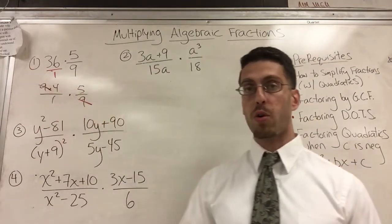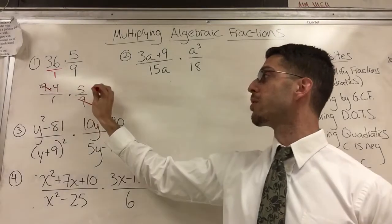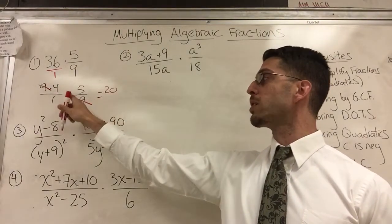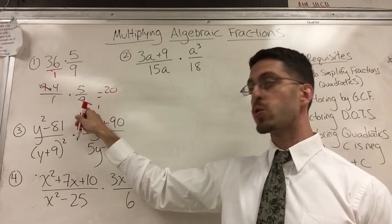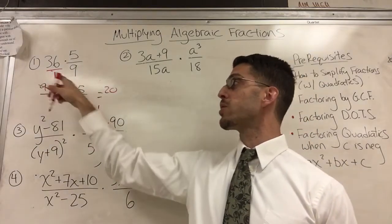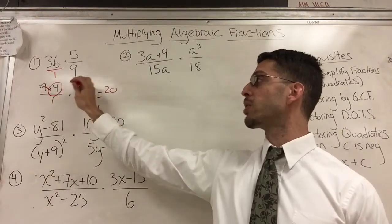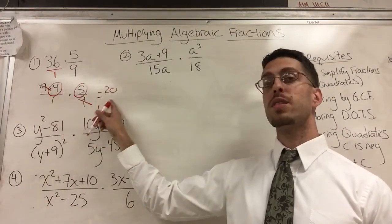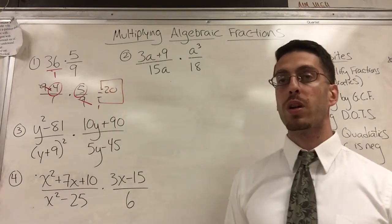9s cancel out. That's called cross-cancelling. And then I just multiply whatever's left. 4 times 5 is 20. A 1 times... When something cancels, it's replaced by a 1. 9 goes into itself once. 9 goes into 36 four times. That's why that 4 is still there. And 4 times 5 is 20. 1 times 1 is still 1. Only rookies write the 1 underneath and leave it. So your answer is 20, the end.